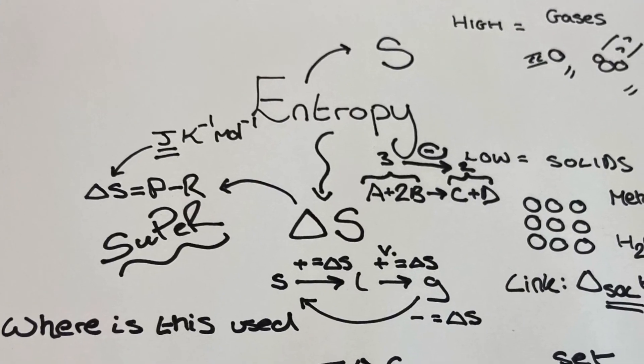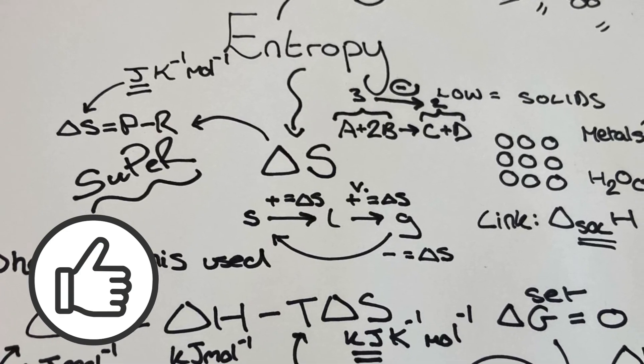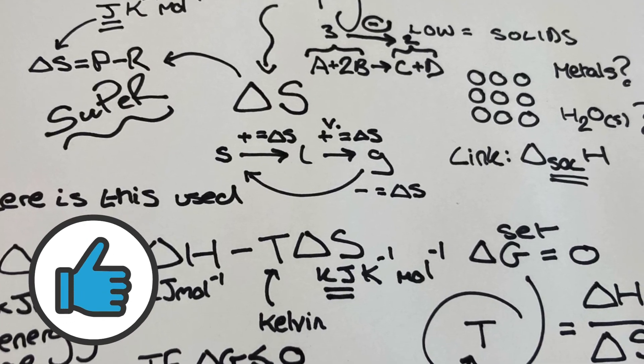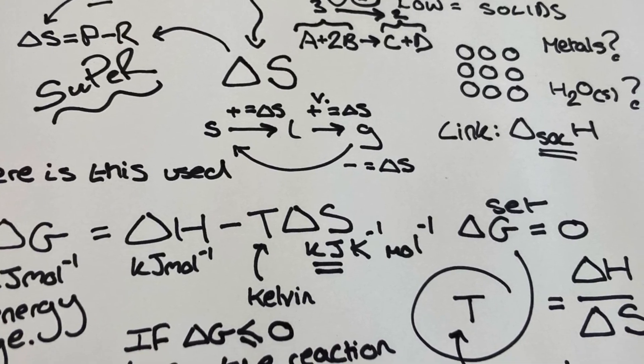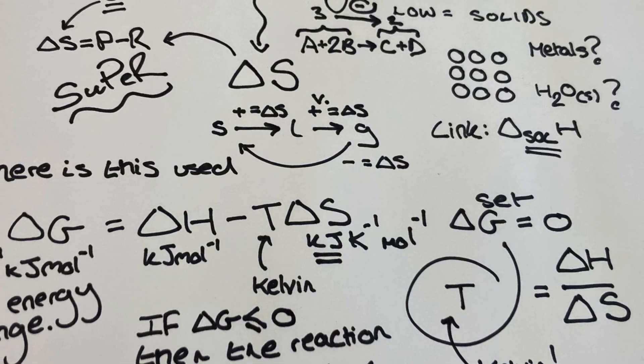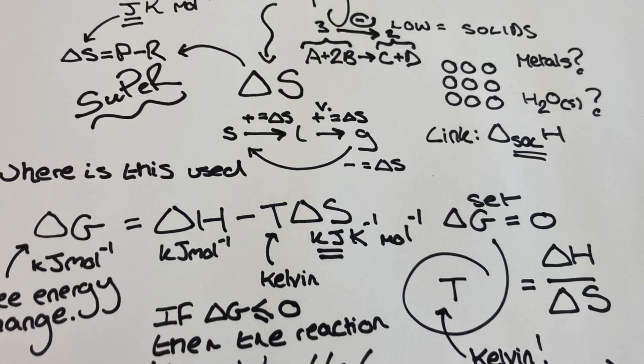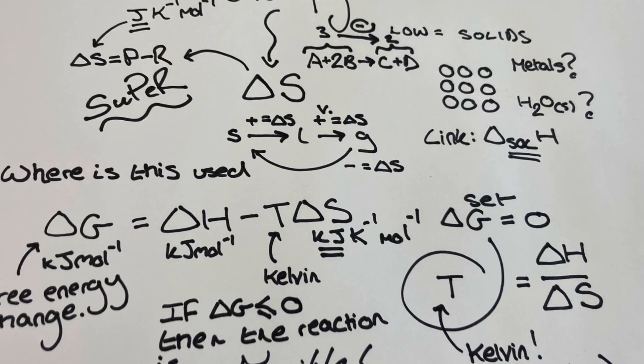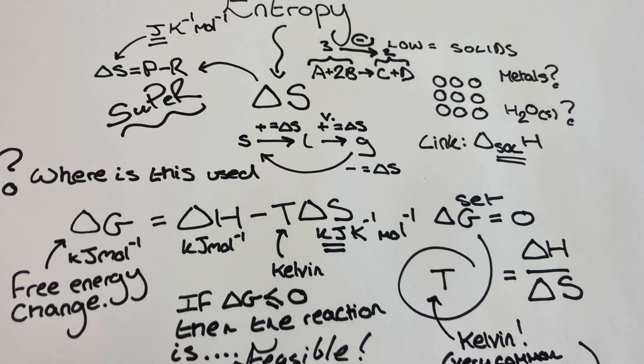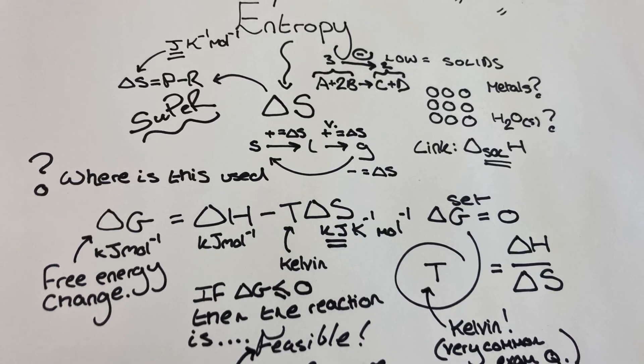The final thing I want to mention is about the limitations of predictions made by ΔG about feasibility in terms of the reaction kinetics. Just because you calculate a negative ΔG value doesn't actually mean a reaction will happen, or it doesn't tell you anything about its rate. The activation energy for the reaction could still end up being very, very large, so the reaction might be happening so slowly that you don't even notice it occurring. This is something really important to consider and it is mentioned right at the end of the free energy section of the OCR A specification.